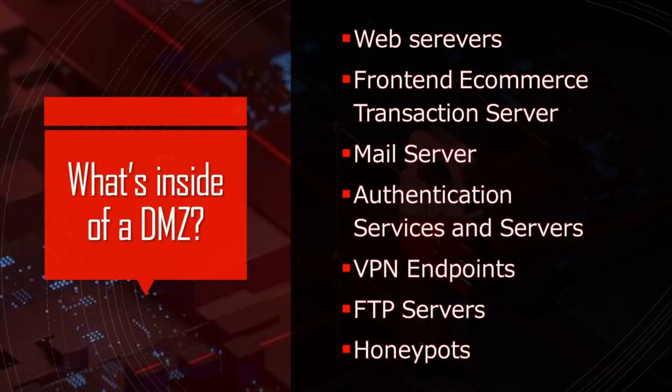Let's talk about some systems found in the DMZ. Web servers are servers that hold public information and allow internet access — you might find website information held on these. Front-end e-commerce transaction servers are used to place orders, but client information will be stored on the back-end behind a firewall. Mail servers relay outside mail onto the inside. Authentication services and servers let you into an internal network. VPN endpoints offer services to the internal network, but they're still kept in the DMZ as they can service remote users outside of the network.